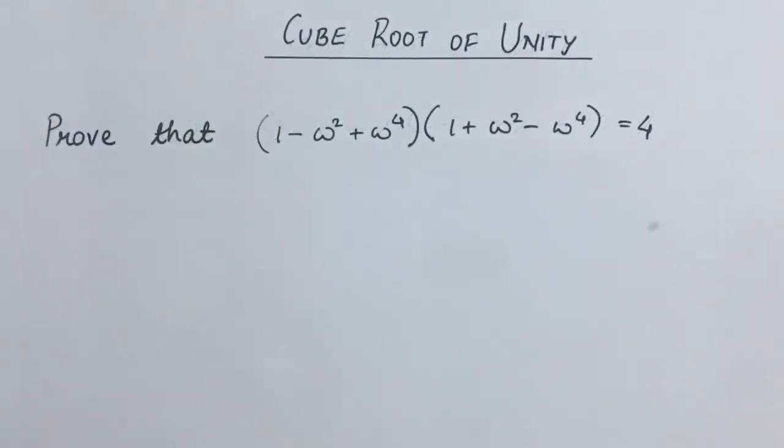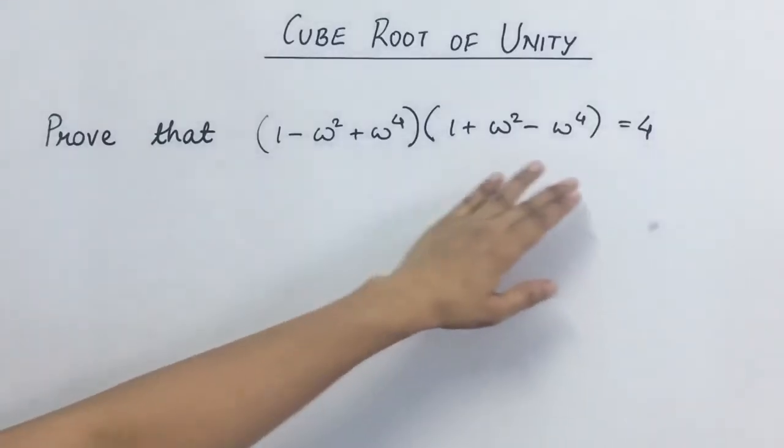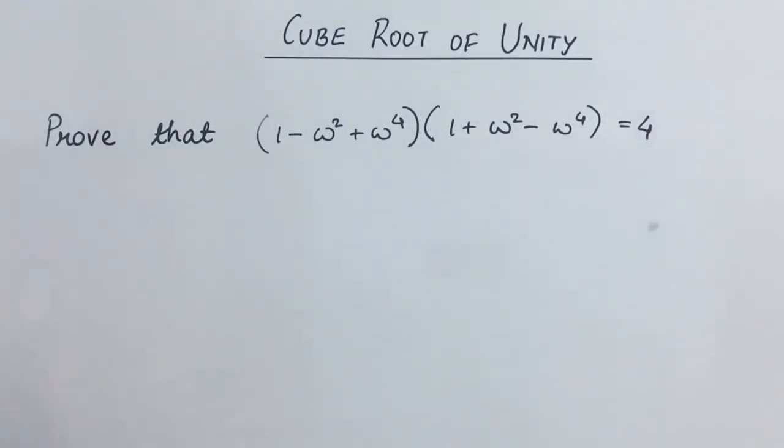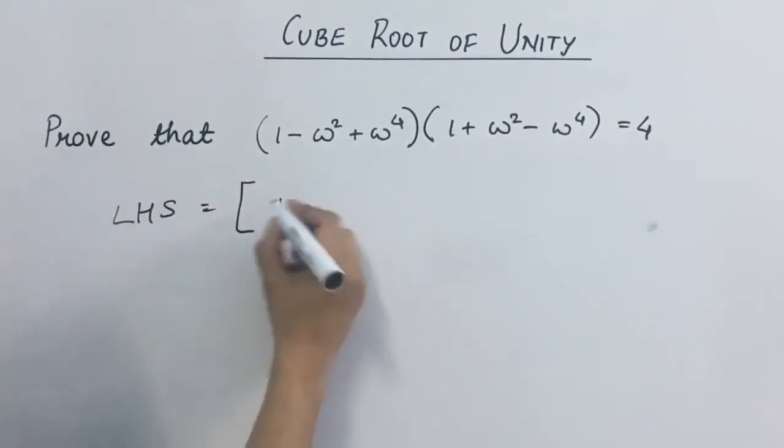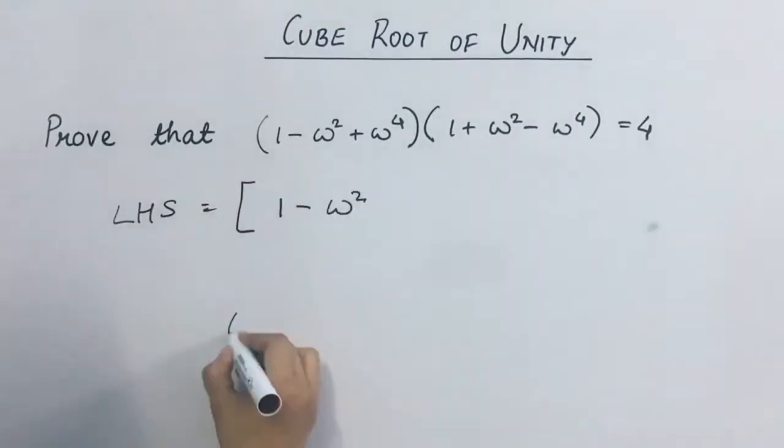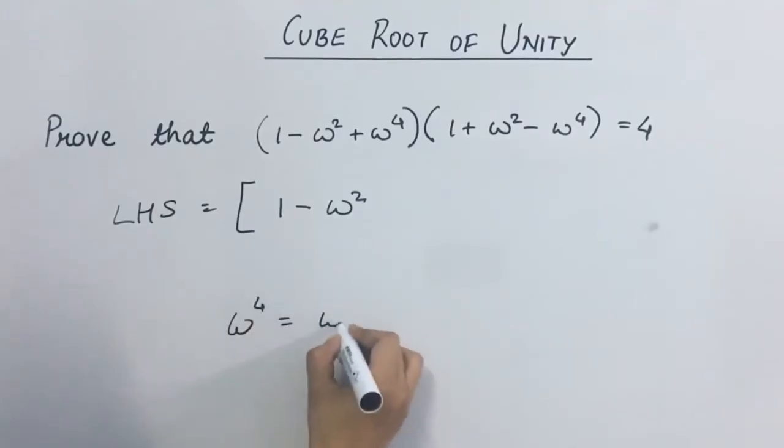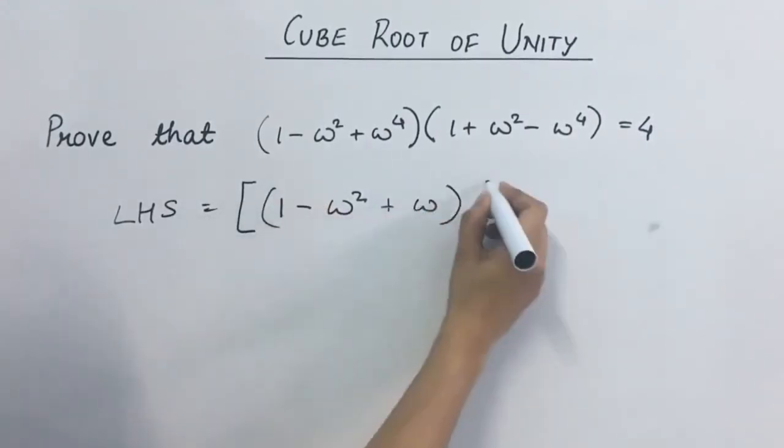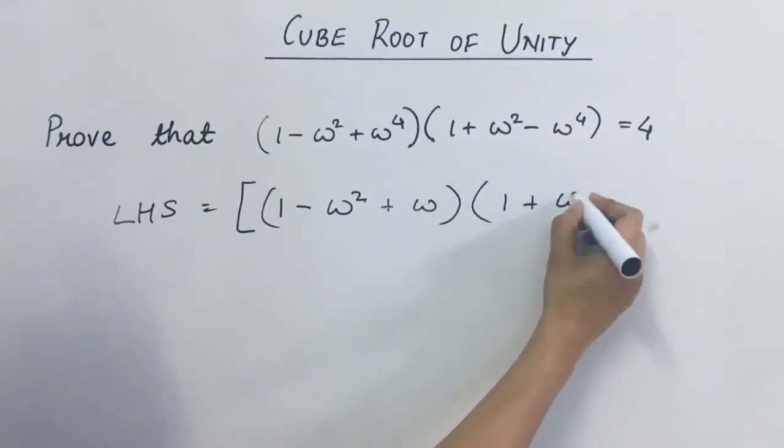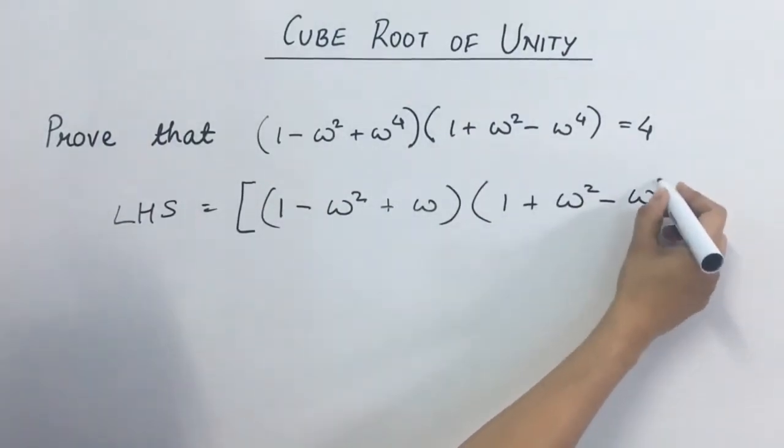Next question. Proof that this thing is equal to 4. Left hand side mein, jaysa amne previous question mein kiya tha, we will try to simplify it. So this side can be written as 1 minus omega square. Omega 4 can be written as omega 3 plus 1, that is into omega. That comes out to be omega itself. So this is omega and 1 plus omega square minus omega.